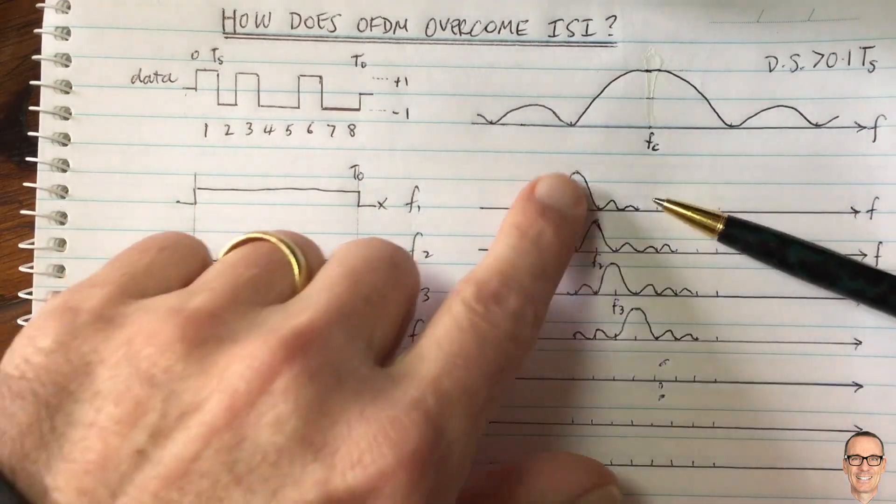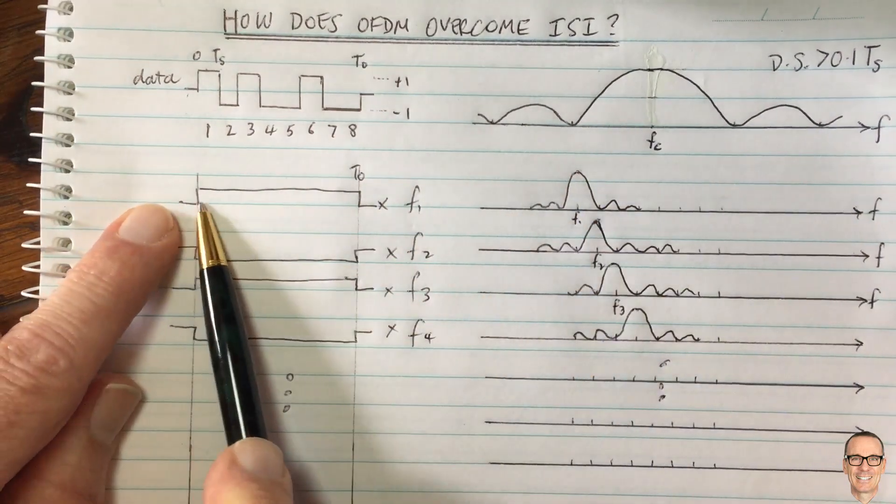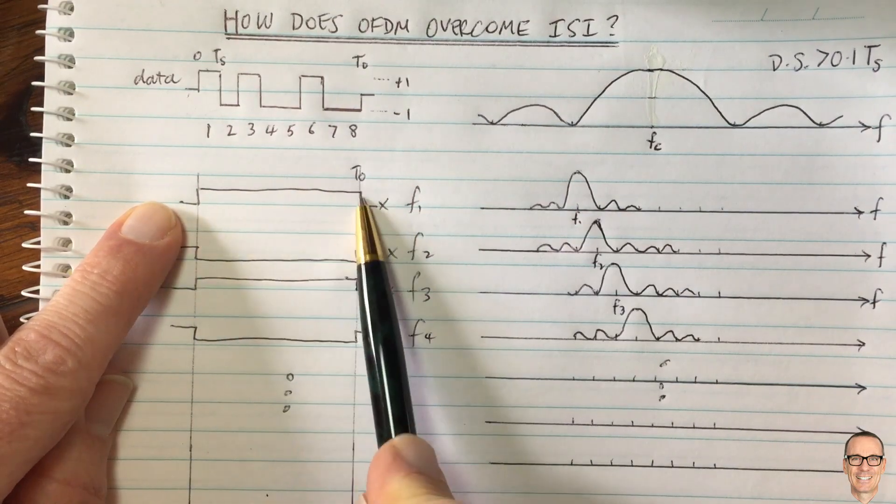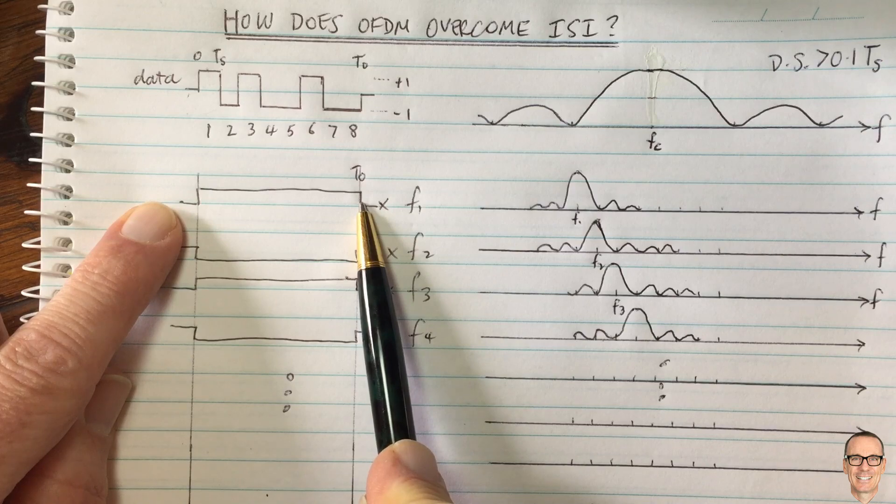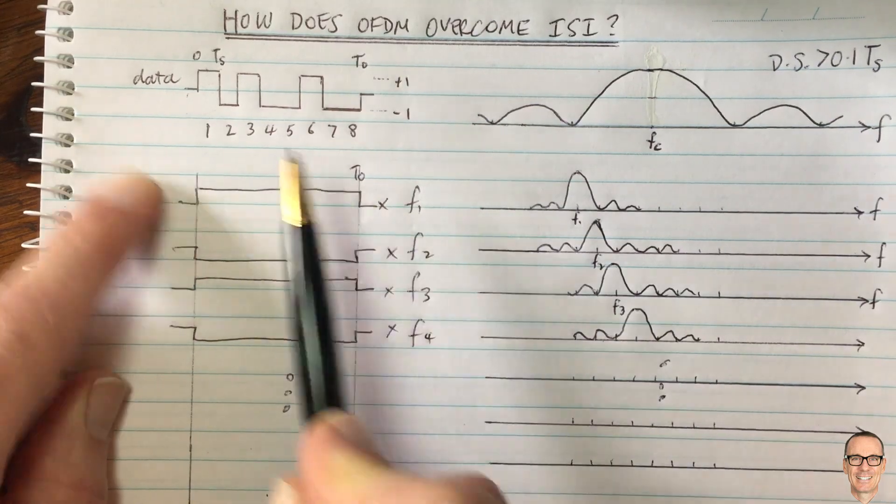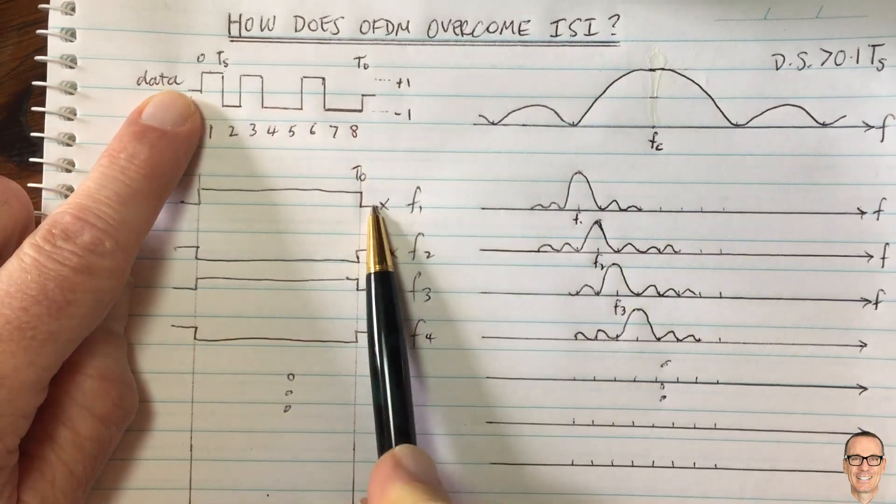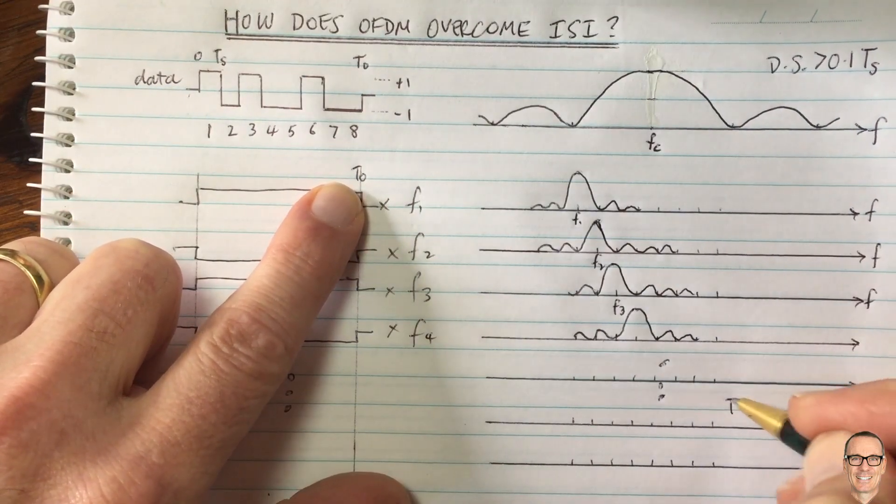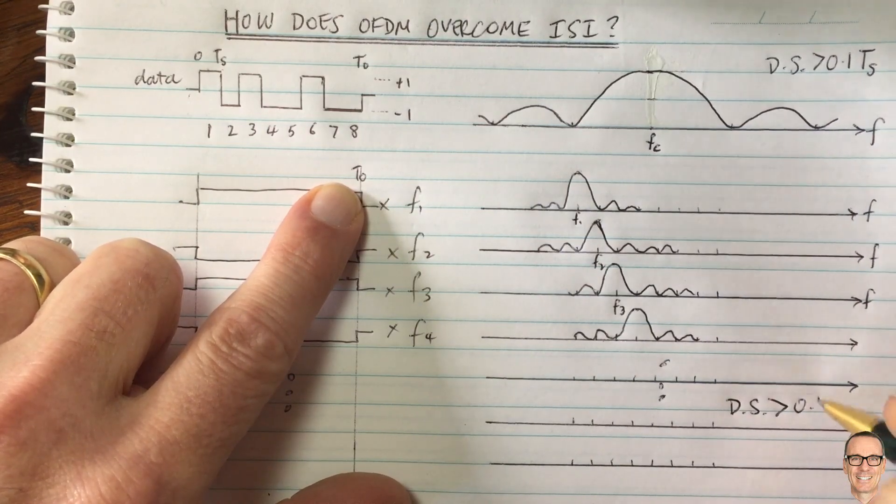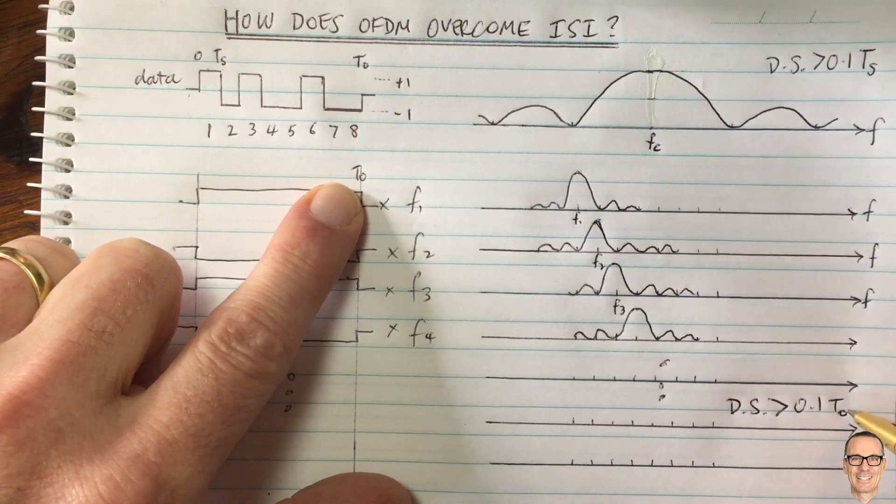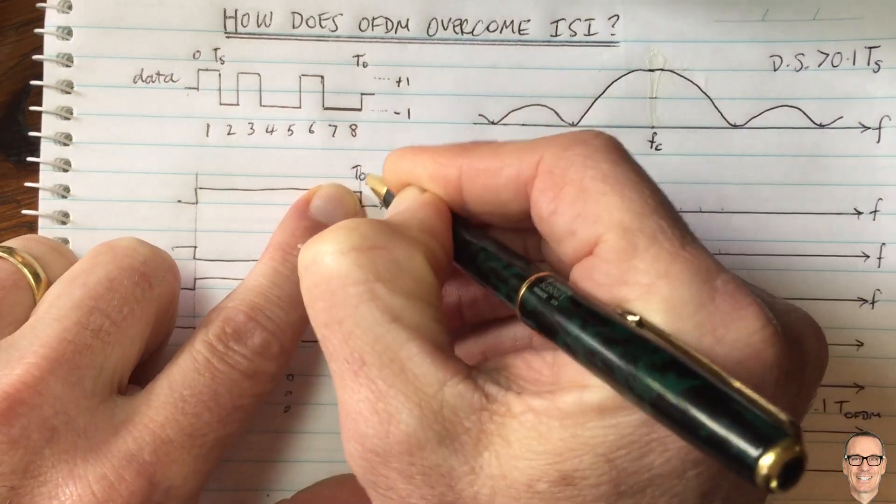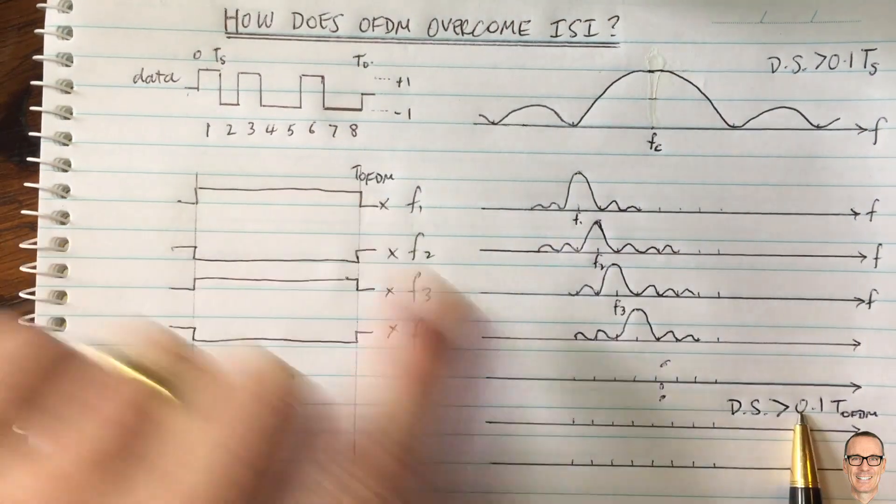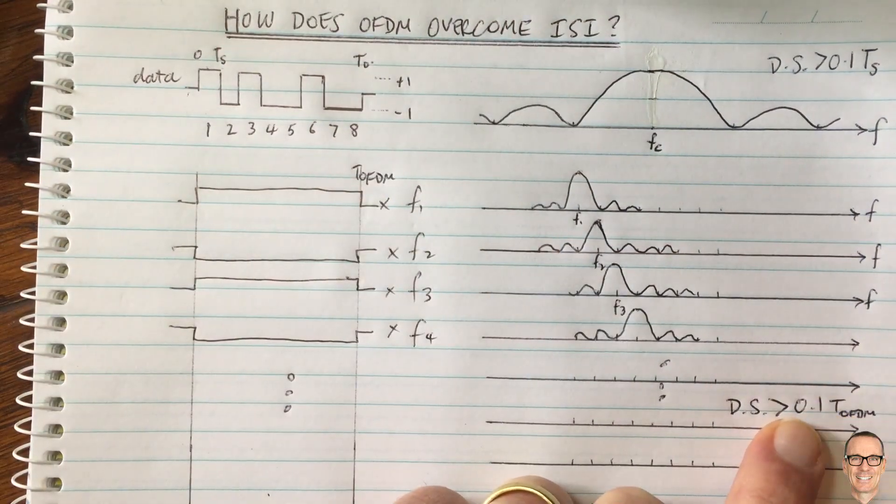But now what we can see with OFDM, where we're sending in different sub-carriers, each of our symbols on each of our sub-carriers lasts for a much longer time. It lasts for the full time of the OFDM sequence. So the OFDM symbol, which lasts for as long as that sequence was, T0. So now for OFDM, the delay spread needs to be bigger than 0.1 of TOFDM for any, I'll call this OFDM here and TOFDM up there. It needs to be 0.1 of TOFDM for it to be significant.